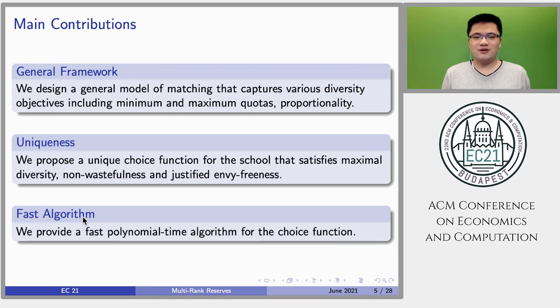Second, we propose a unique choice function for the school that satisfies three desirable properties, including maximal diversity, non-wastefulness, and justified envy-freeness. Third, we propose a fast polynomial-time algorithm to implement the choice function.